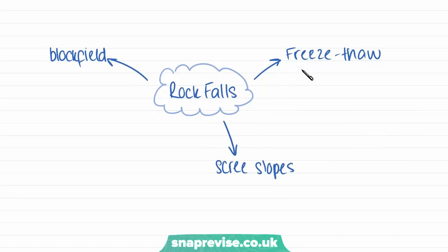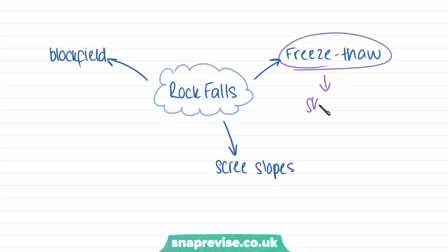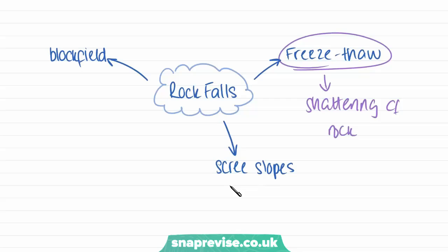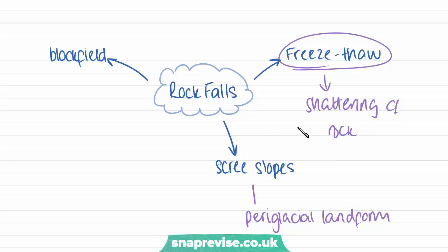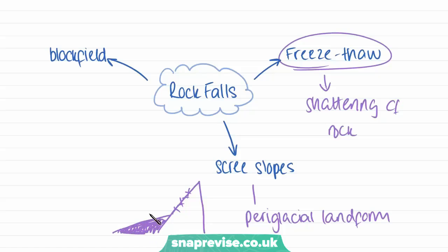Our last type of mass movement is rockfalls, which is essentially freeze-thaw weathering discussed in earlier videos — the shattering of rock when water freezes inside it and expands as it turns into ice. This process can cause the formation of scree slopes at the bottom of slopes, a common periglacial landform. This is simply the shattered rock collecting at the bottom of a slope.